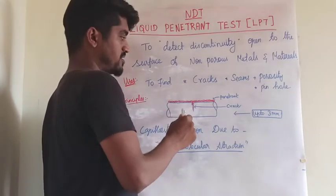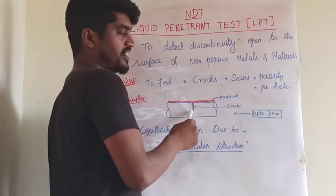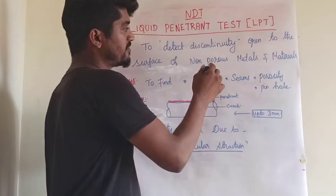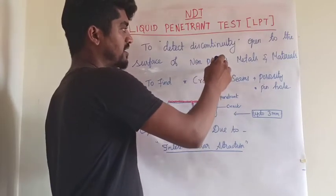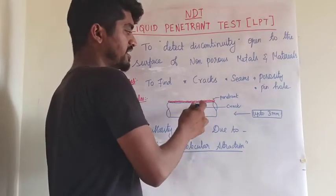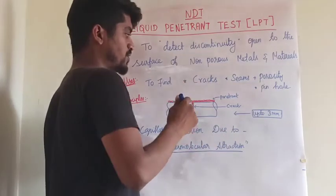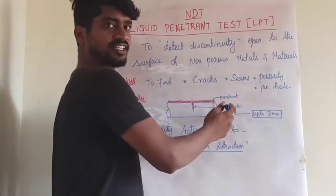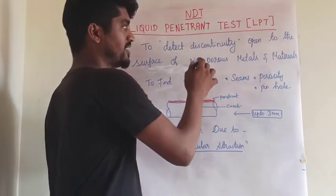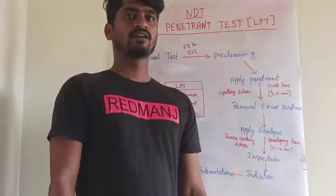In this process, the penetrant penetrates inside the holes or defects if any occur. If we take a porous metal or porous material, the penetrant would penetrate inside the holes and we cannot find the defect accurately. So this method is only used on non-porous metals and materials.